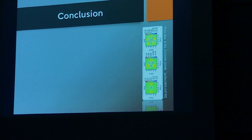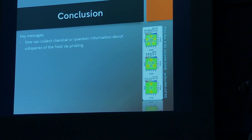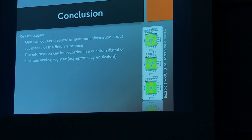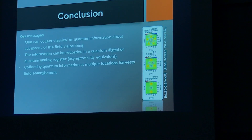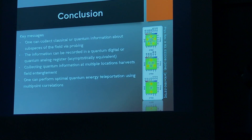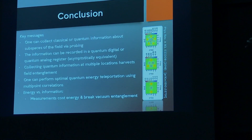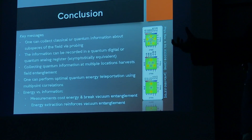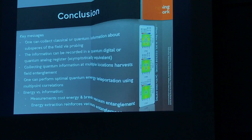In conclusion, the key messages: you can collect quantum or classical information about a certain observable about subspaces of the field via probes, and record this on quantum digital or quantum analog registers — which are equivalent in a certain limit. You can collect quantum information at multiple locations and swap field entanglement onto the probes. You can perform an optimal quantum energy teleportation protocol harnessing multipoint correlations. On the energy-information theme: measurements cost energy and break vacuum entanglement, while extracting energy from the local volume of vacuum reinforces the vacuum entanglement.